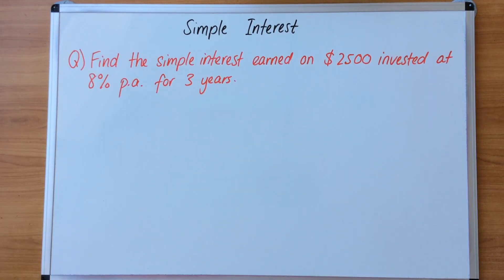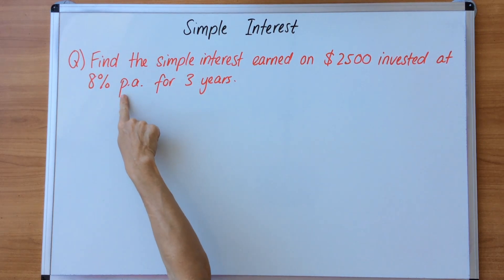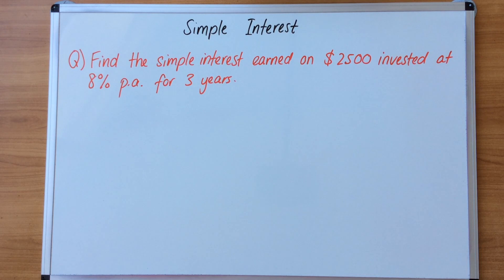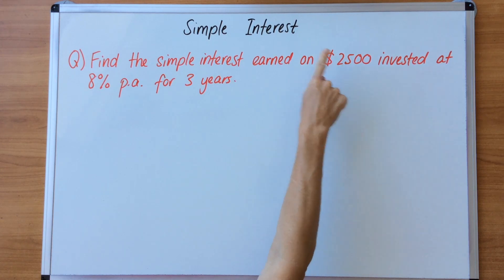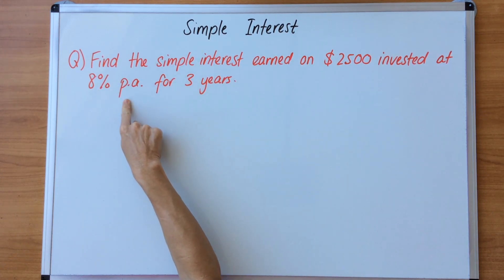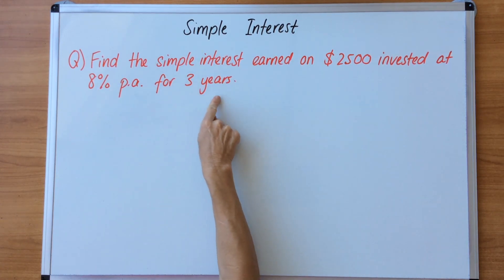Let's take a look at this question. It says: find the simple interest earned on $2,500 invested at eight percent per annum for three years. The abbreviation p.a. means per annum, which means per year. So they're asking you to find the simple interest from this amount of money invested at eight percent per year for three years.